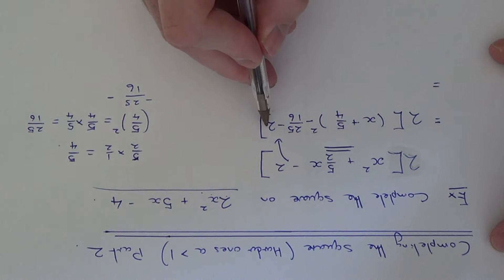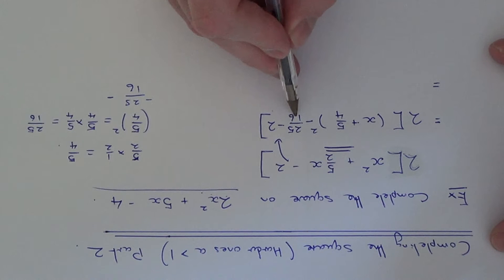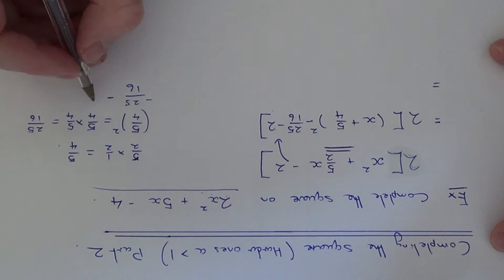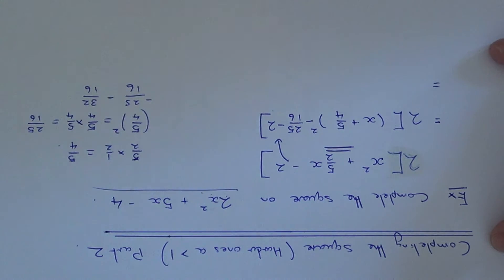Now if we change the 2 to a fraction, let's make it 16 by multiplying it by 16. So that will give us 32 over 16. So it's now easiest to take away now. So that will give us minus 57 over 16.